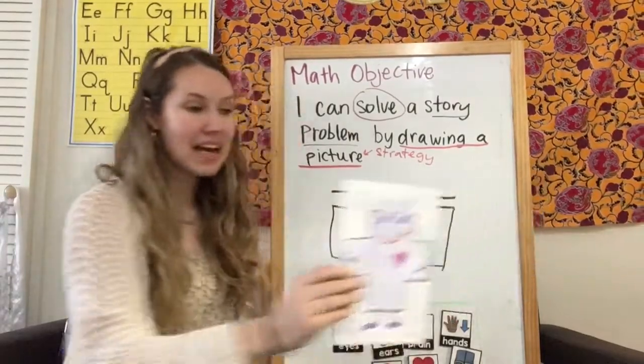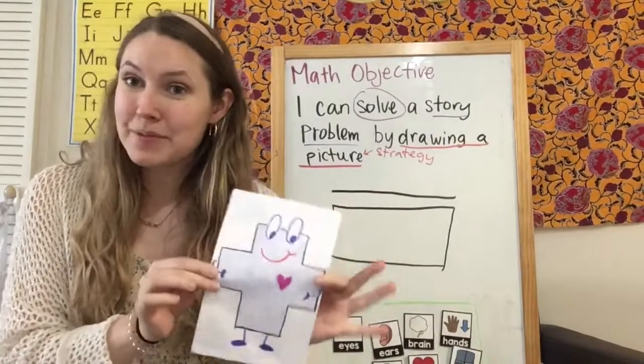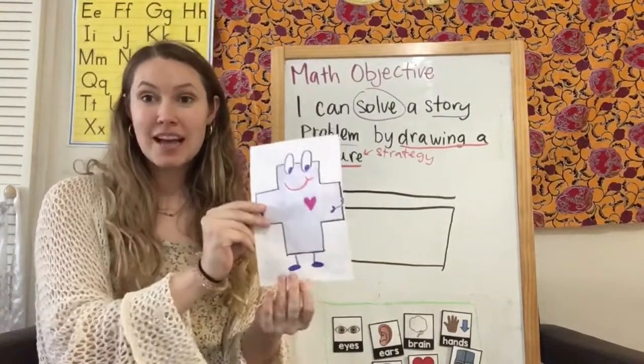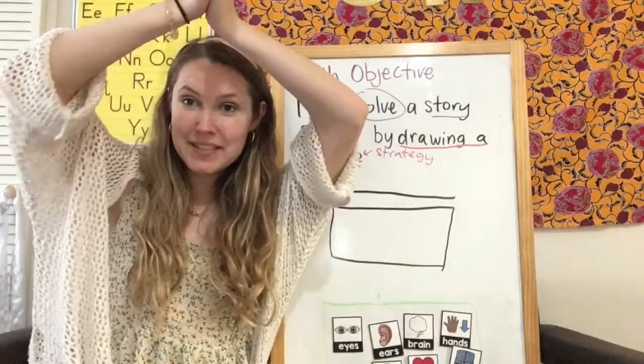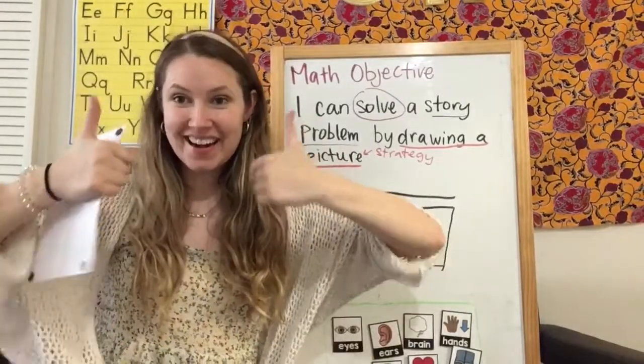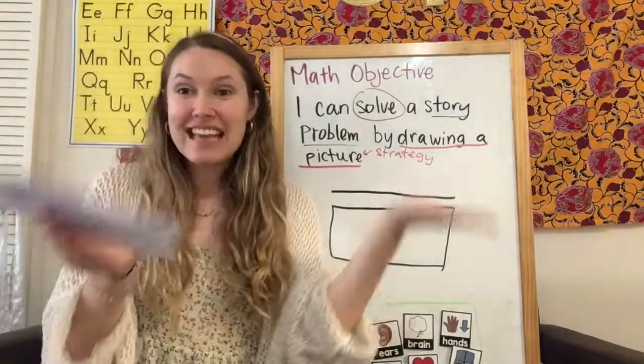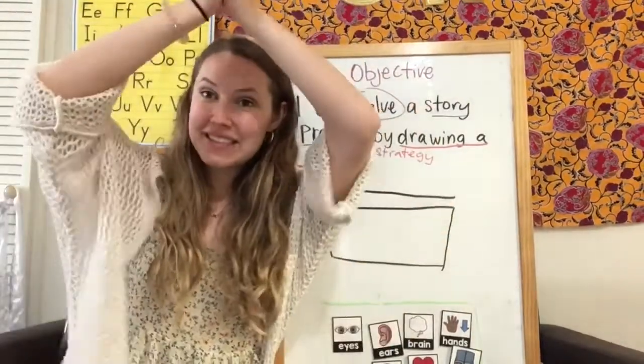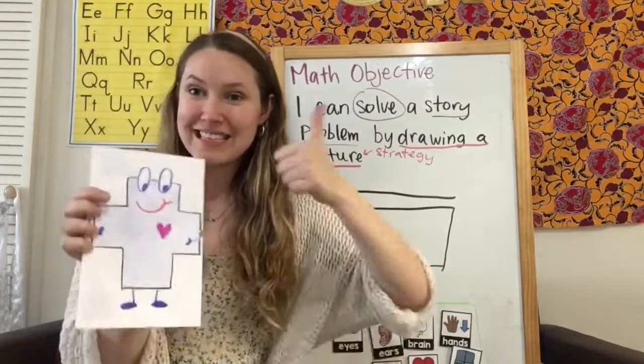So to begin, we're going to talk really quickly about what Gus the Plus helps us do. So let's say our rhyme together. He takes two things and puts them together. Adds them up because more is better. Let's do it one more time. Do it with me. He takes two things and puts them together. Adds them up because more is better.